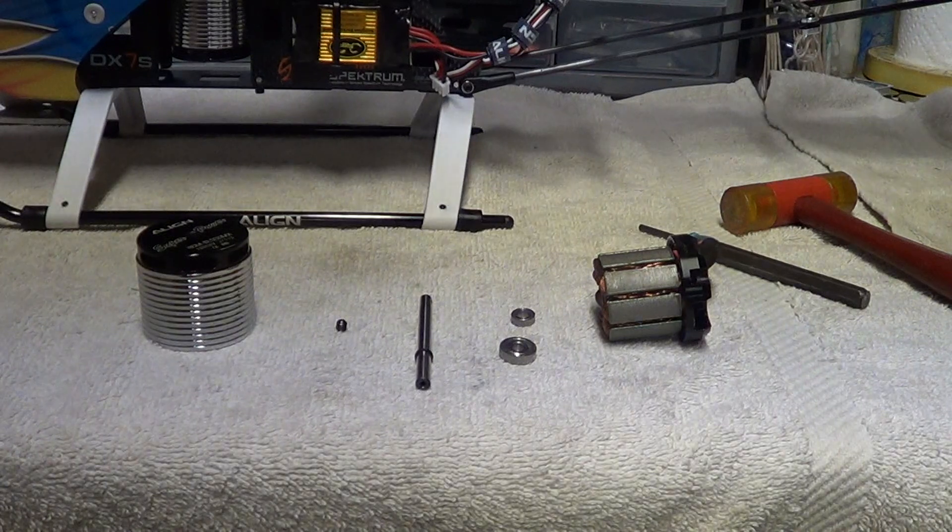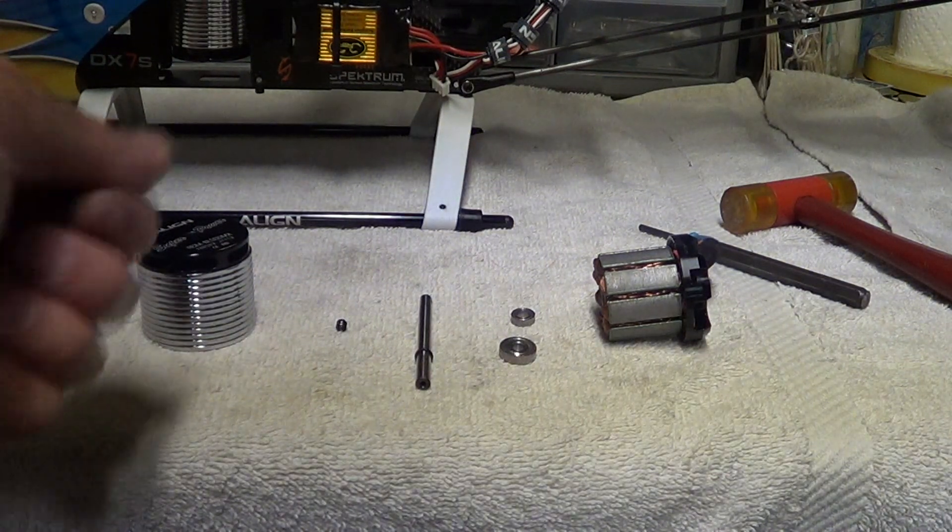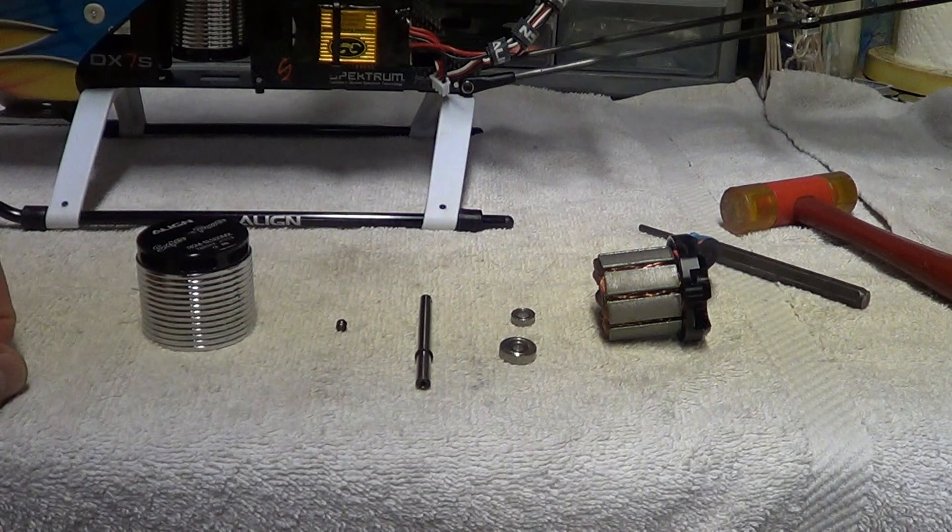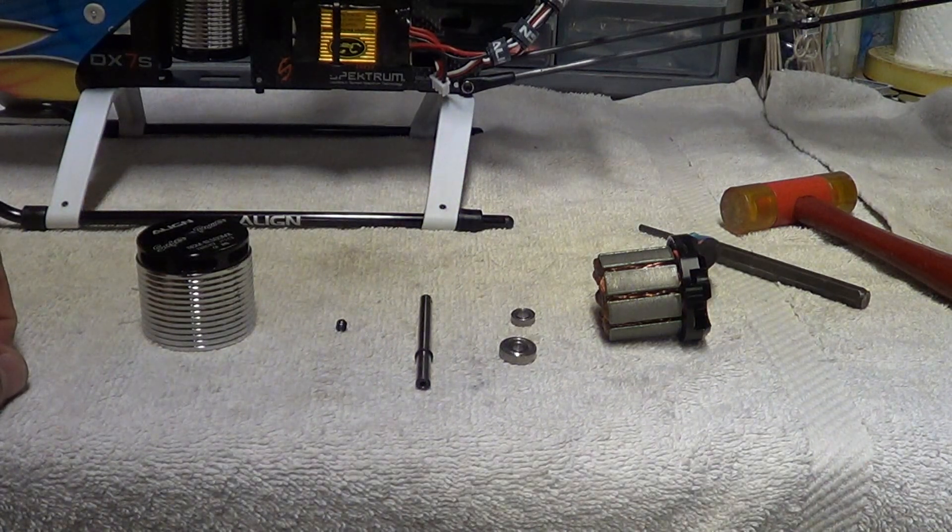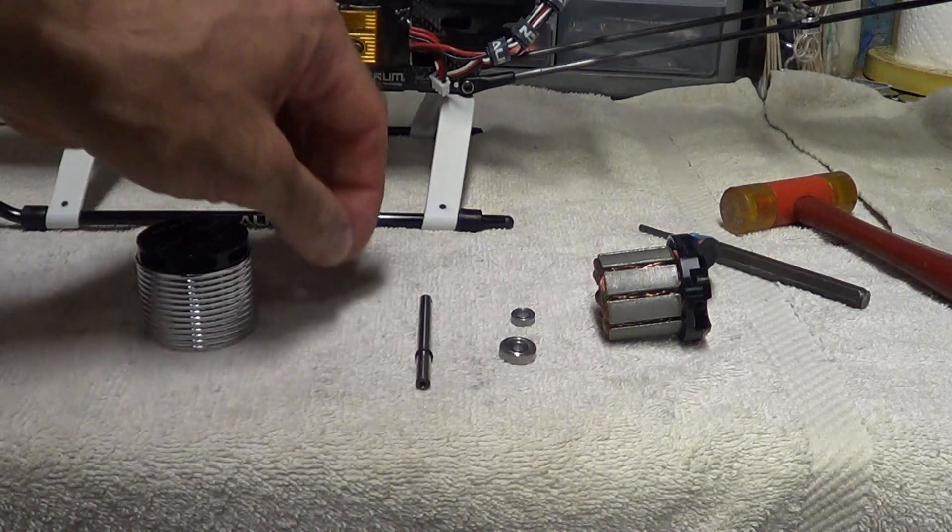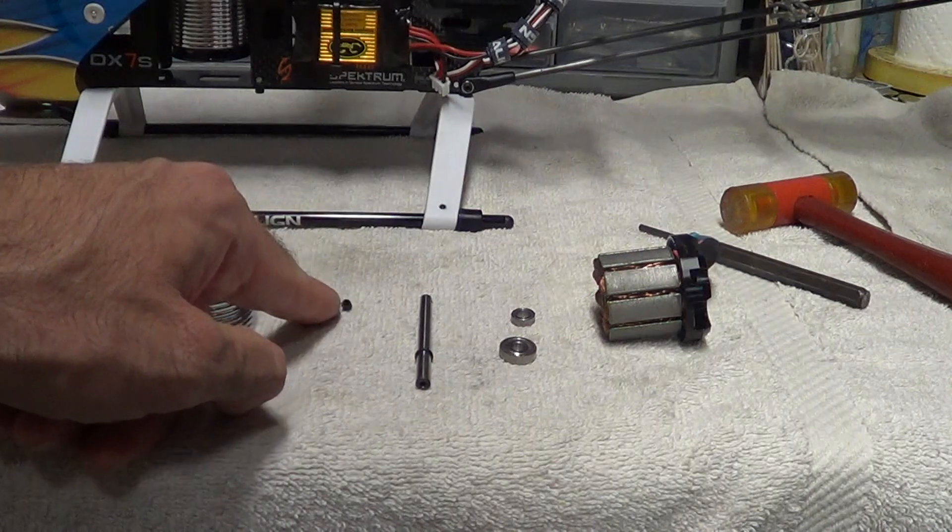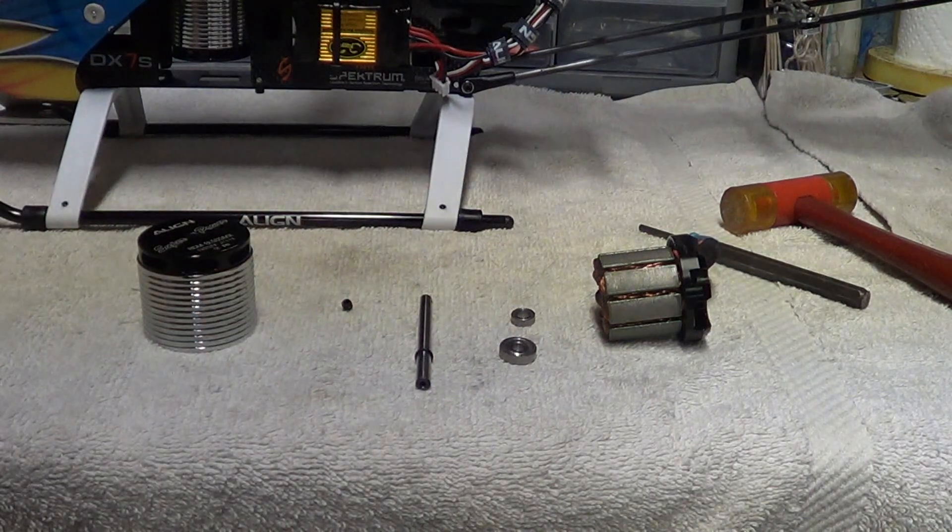And basically, it doesn't hold it like loctited together. The wrench or Allen driver comes right out. So don't worry about that. Don't drench it. Just put a dot of super glue on the end and then insert it into the set screw.